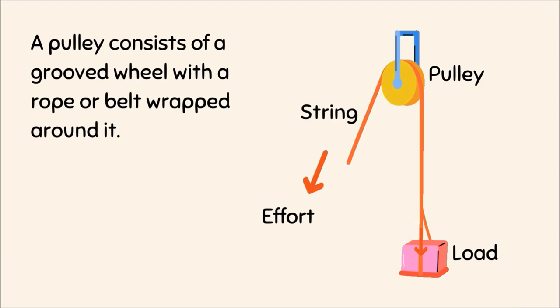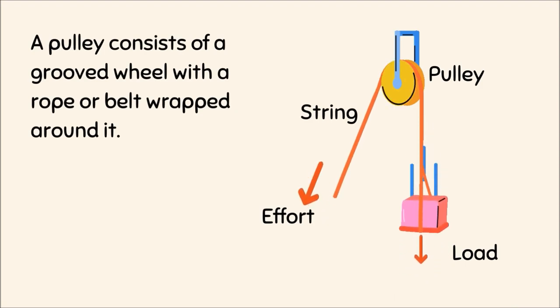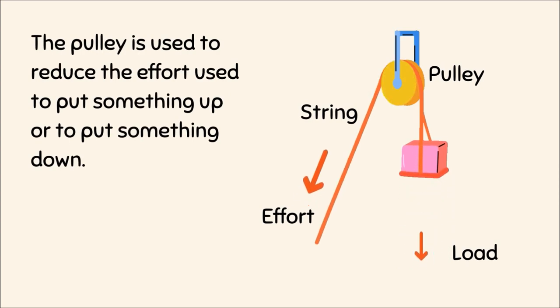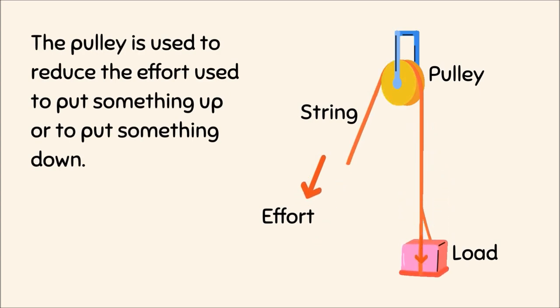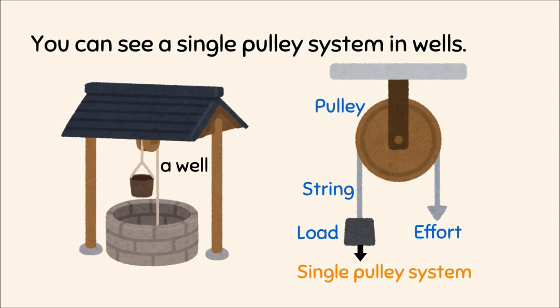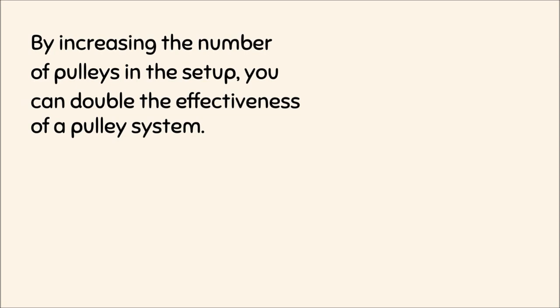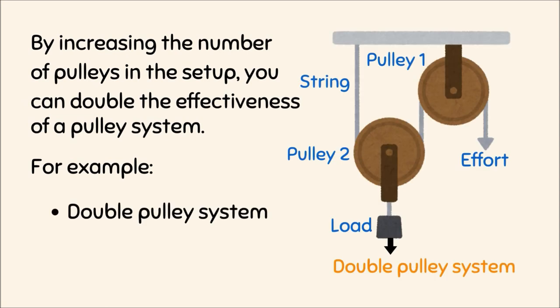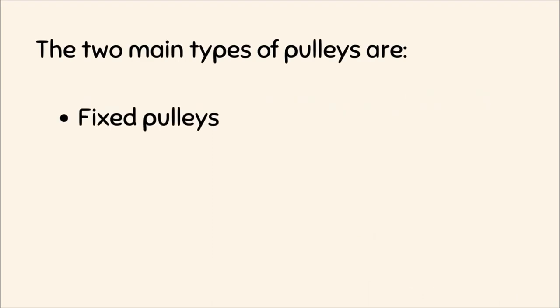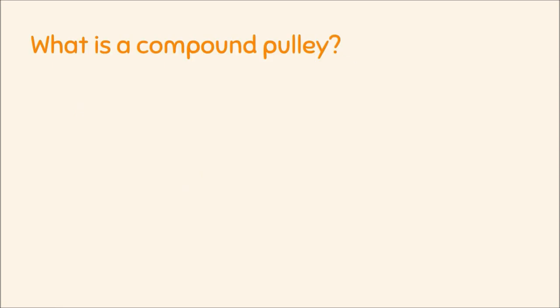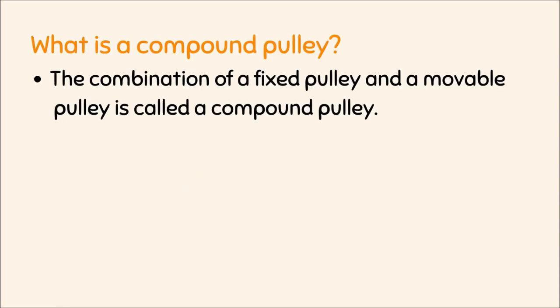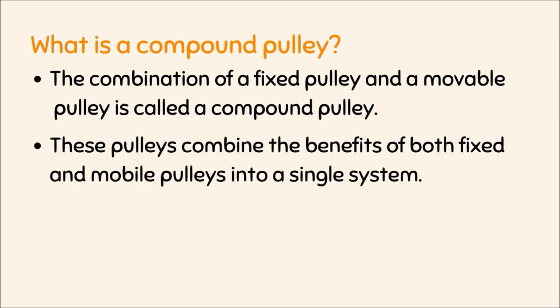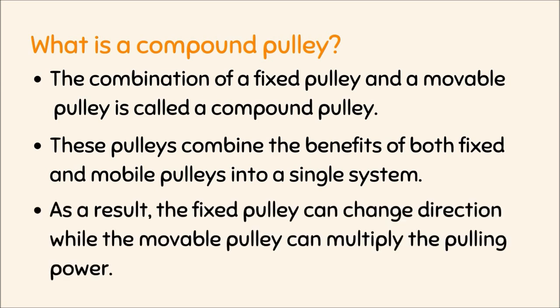A pulley consists of a grooved wheel with a rope or belt wrapped around it. The pulley is used to reduce the effort needed to lift or lower something. A single pulley system can be seen in wells. By increasing the number of pulleys in the setup, you can double the effectiveness of the system. The two main types of pulleys are fixed pulleys and movable pulleys. The combination of a fixed pulley and a movable pulley is called a compound pulley, which combines the benefits of both into a single system.